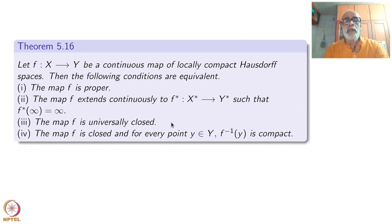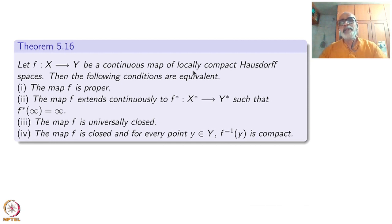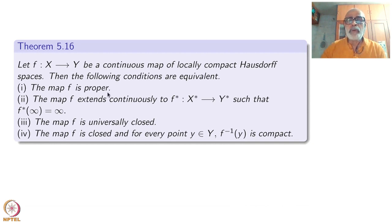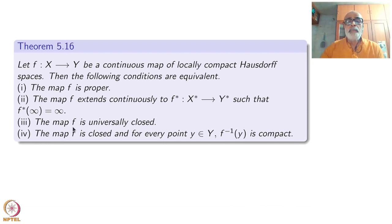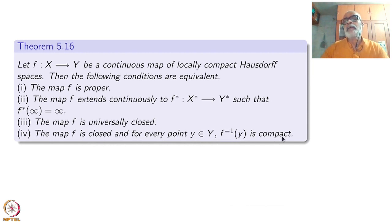Now we come to the properness theorem. Let f from X to Y be a continuous map of locally compact spaces. Then the following conditions are equivalent: f is a proper map; the map f extends continuously to the one-point compactifications; the map f is universally closed; the map f is closed and for every point y in Y, f-inverse of y is compact.